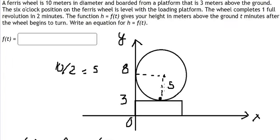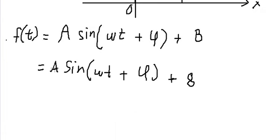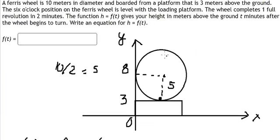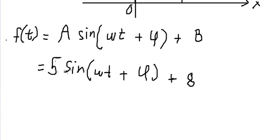Because the radius of the wheel is about 5, the amplitude A equals 5. The top position is at 8 plus 5 = 13, and the bottom is at 8 minus 5 = 3. At six o'clock, the height is about 3 meters, and we can find that value in the equation.